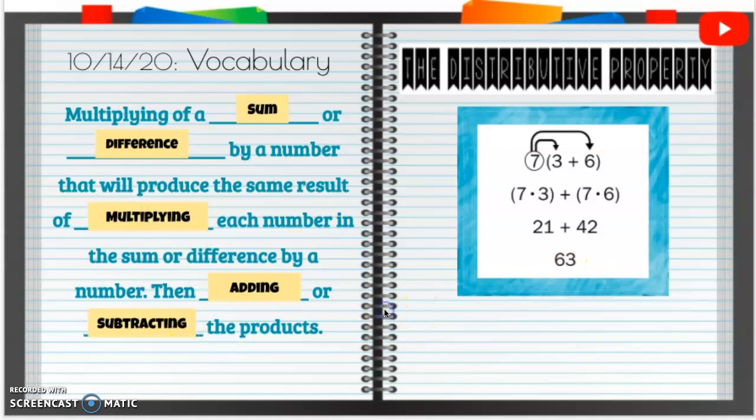Our full definition is: the multiplying of a sum or difference by a number will produce the same result of multiplying each number in the sum or difference by a number, then adding or subtracting the products.